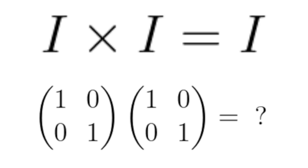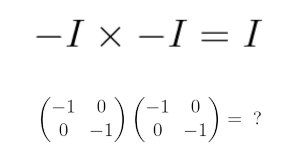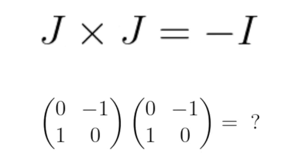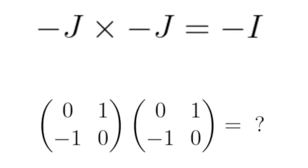I times I is I. Negative I times negative I is I. J times J is negative I. Negative J times negative J is negative I.